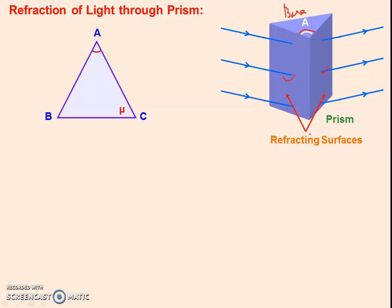Now we are talking about the refraction. When a ray is incident at the first refracting surface, it refracts. It is going from rarer to denser medium, so it bends towards the normal. At the second surface, it is going from denser medium to rarer medium, so it will move away from the normal. These two surfaces are refracting surfaces; BC is the base and the angle opposite to the base is the angle of prism — the prism angle.